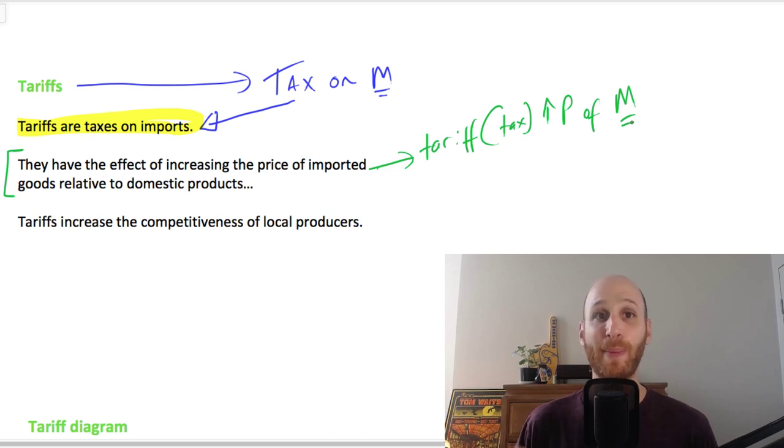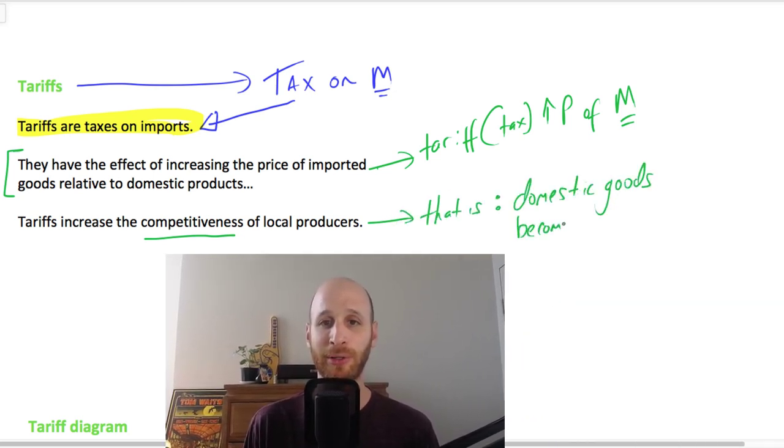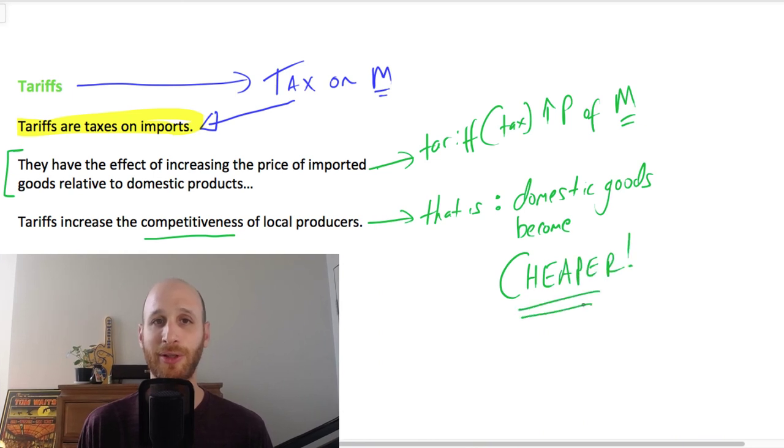So imports become more expensive than domestic products because of the tariff. As a result, tariffs increase the competitiveness of local producers. That is, domestic goods become cheaper.